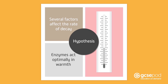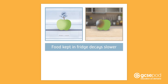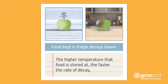You can write a hypothesis for this based on your everyday knowledge. You know that food kept in the fridge decays slower than food kept in a warm kitchen. Therefore we can hypothesize that the higher the temperature that food is stored at, the faster the rate of decay.